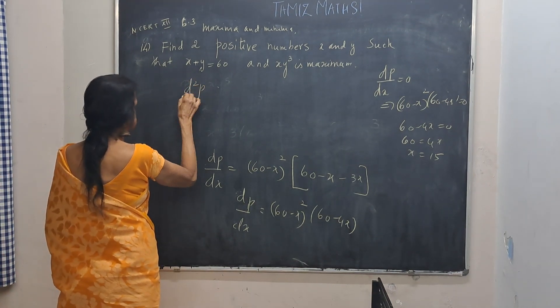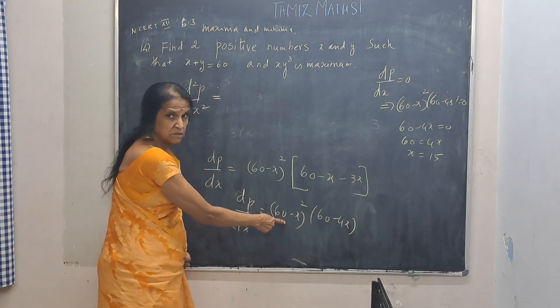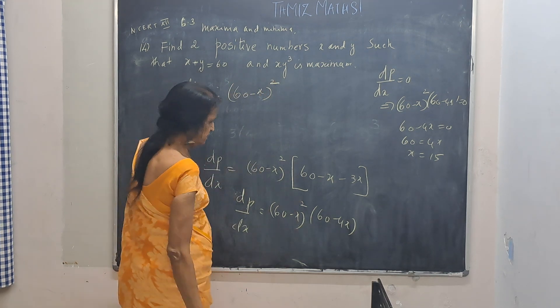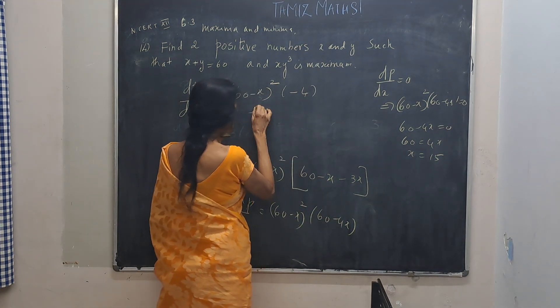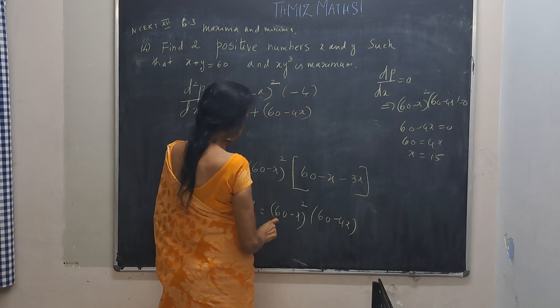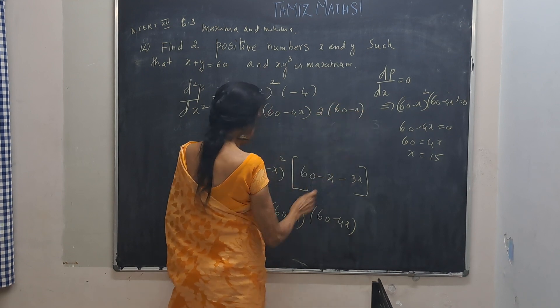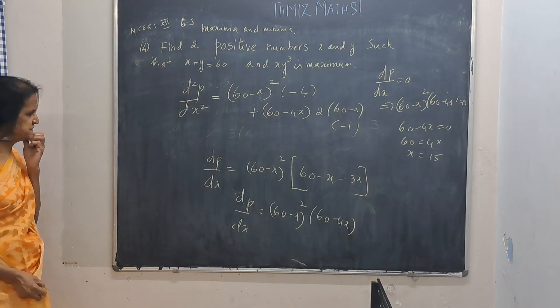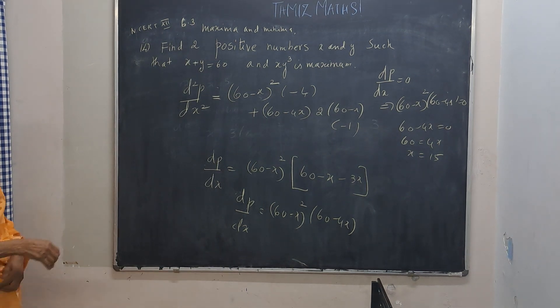So now we go for D2P by dx2. Differentiate this, first function into derivative of the second function minus 4, plus second function into derivative of the first function. Derivative of 60 minus x will be minus 1. I hope you understand me. So 60 minus x. Oh, it's a few more minutes, probably will be over there.